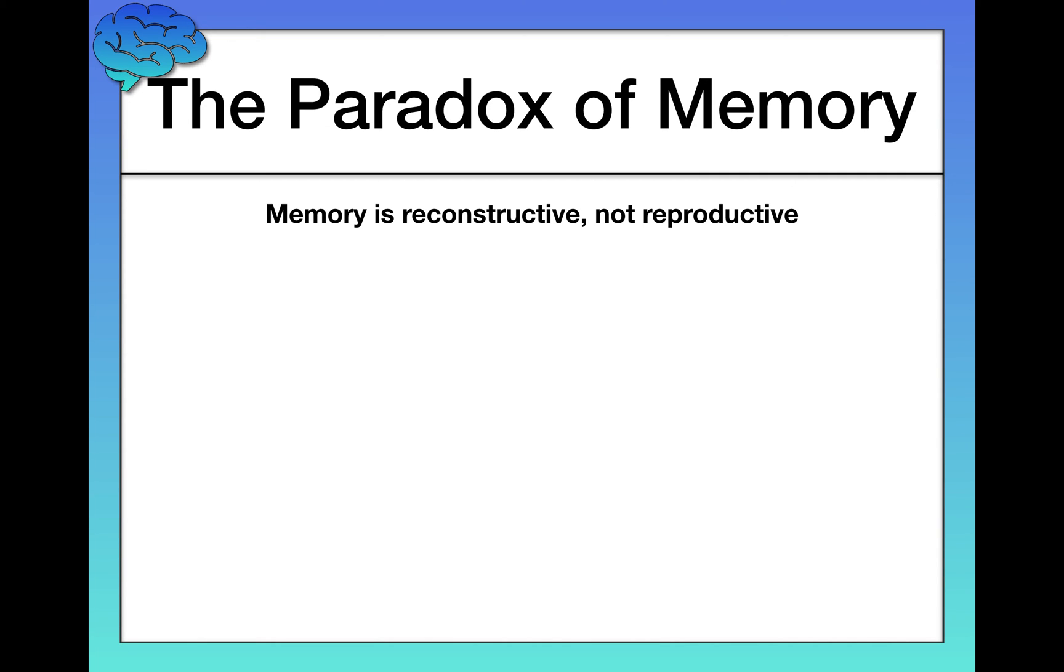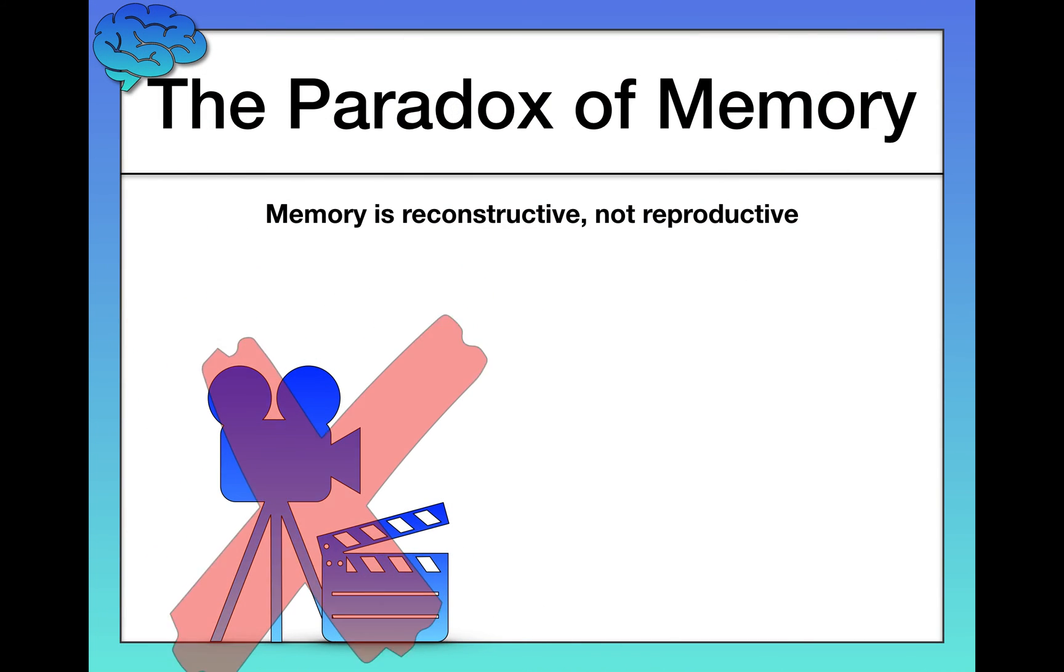Now, the reason just to kind of foreshadow some of this—the reason that memory is amazing in some circumstances, but the reason we forget, the reason we have limitations in our memory, is this key theme right here: memory is reconstructive, not reproductive. This is to say memory isn't some sort of a video camera where you experience something in the world, you take a recording of it, and then when it's time to remember that experience you sort of play the recording like a file on your computer. That's not how our brains work. That's not how memory works. Memory is not reproductive—we're not reproducing things that we experienced. Instead, we're reconstructing things from scratch.